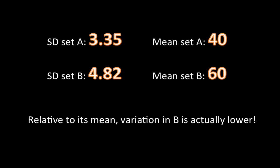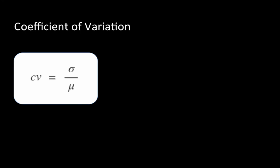We need to look at standard deviation in the context of the mean of the corresponding values. When comparing populations whose means are quite different, standard deviation alone might not give a good picture of relative variability. Therefore statisticians use the coefficient of variation, or CV, which is standard deviation divided by the mean — sigma divided by mu. In our earlier example, sigma divided by mu is actually lower for set B than for set A.